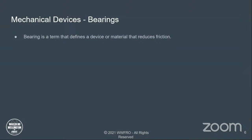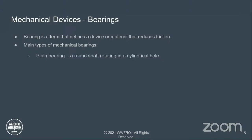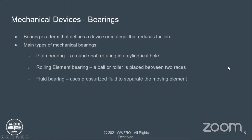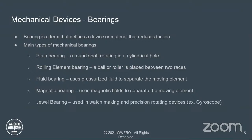A bearing is a term that defines a device or material that reduces friction. The main types of mechanical bearings include: a plane bearing, which is a round shaft rotating in a cylindrical hole; a rolling element bearing, such as a ball or roller placed between two races; a fluid bearing that uses pressurized fluid to separate the moving element; magnetic bearings that use magnetic fields; and jewel bearings used in watchmaking, developed by Swiss watchmakers hundreds of years ago.